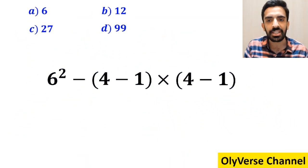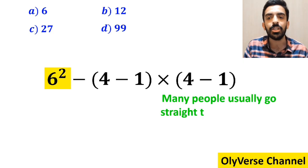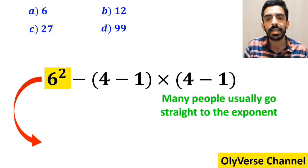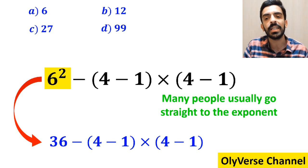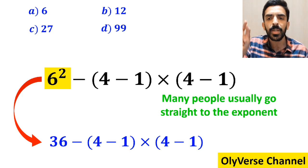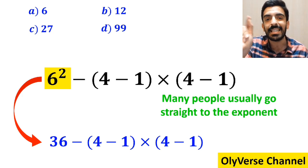And the first step to solve this question, many people usually go right to the exponent and write the whole expression in the following form: 36 minus 4 minus 1 inside the parenthesis, then multiplied by 4 minus 1 inside the parenthesis again.